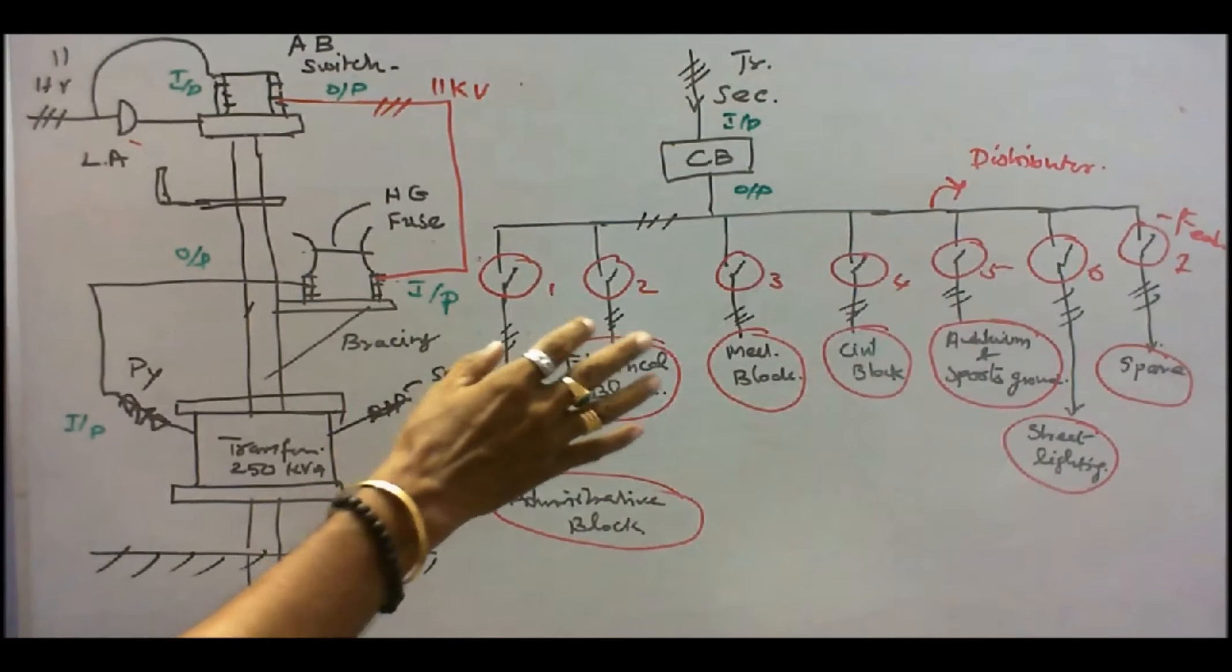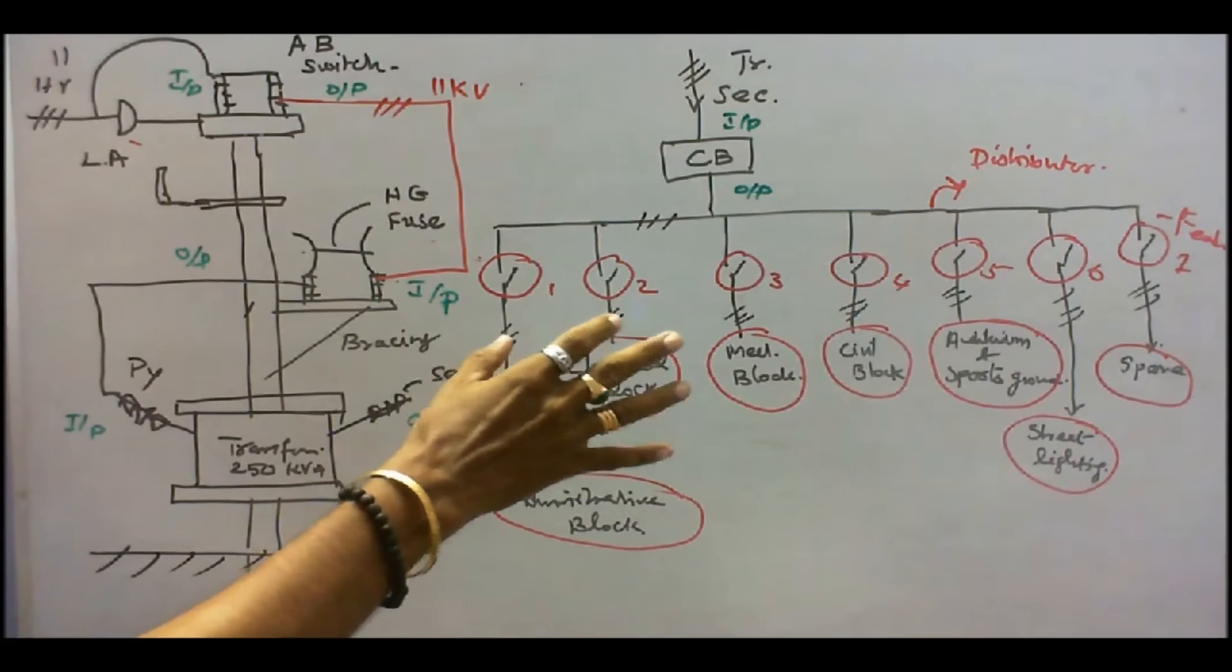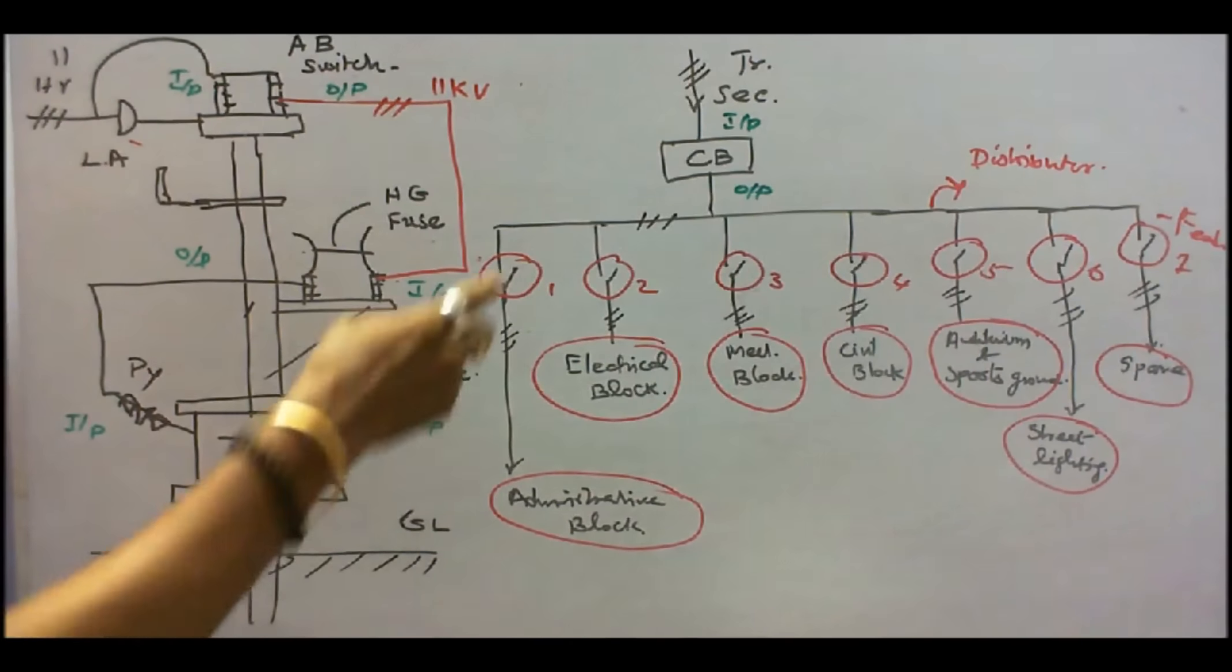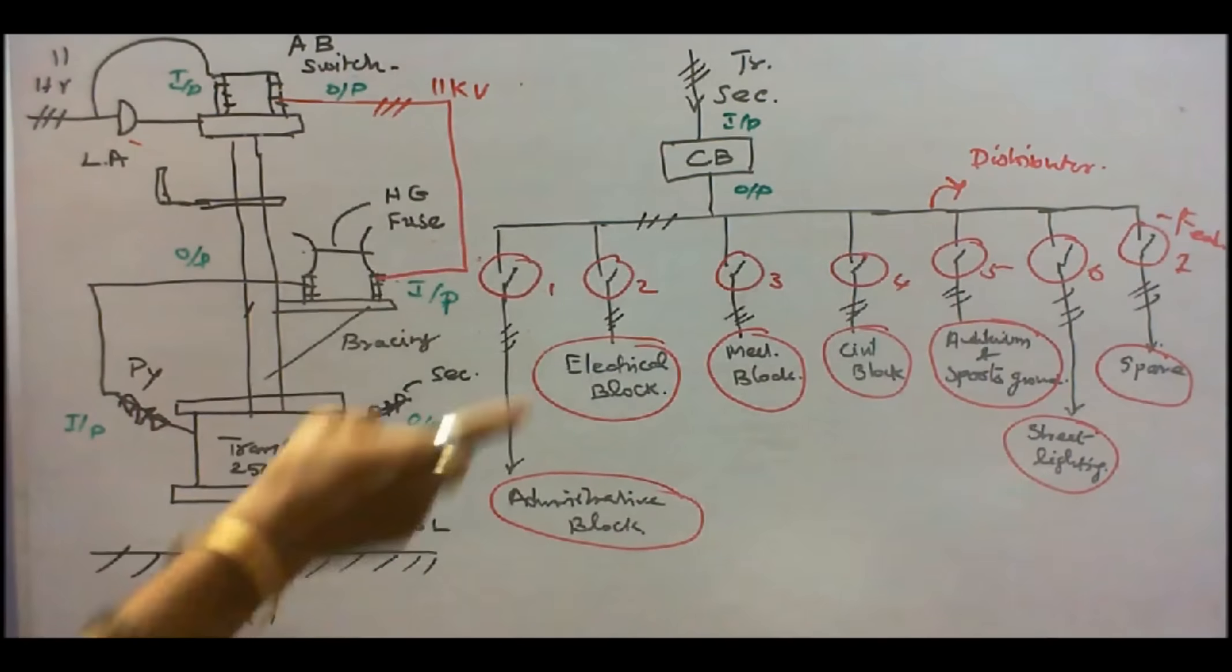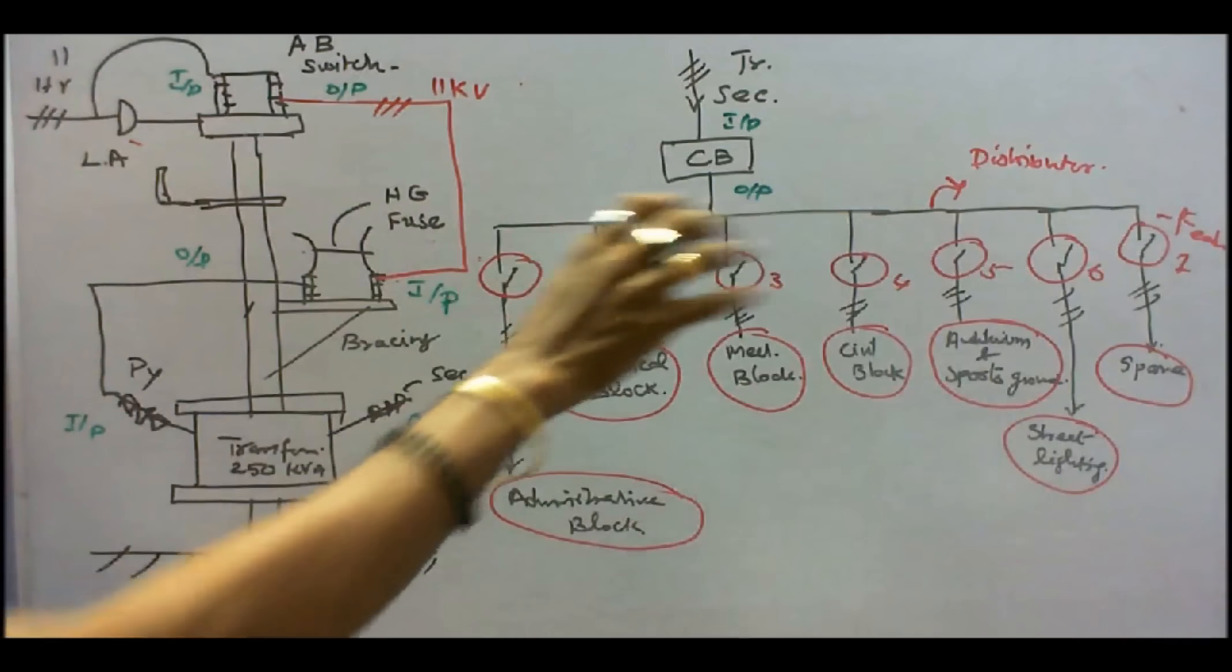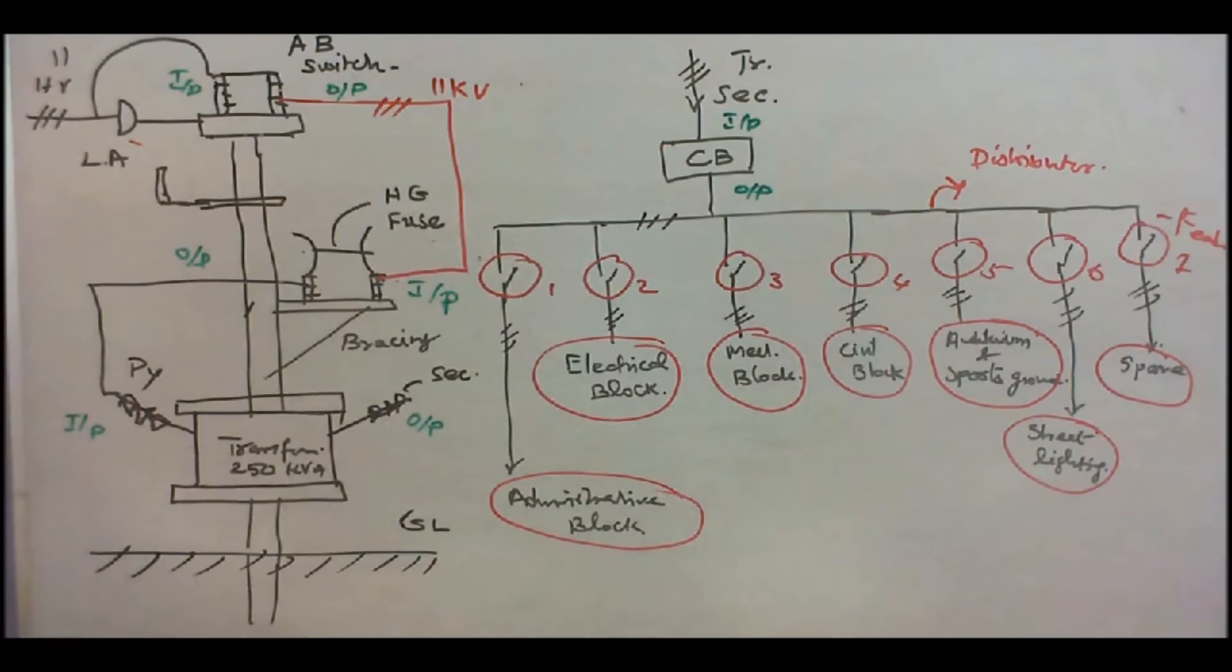This is a single line diagram of an electrical network of an engineering college. The output of the transformer secondary goes to the input of the circuit breaker. The output of the circuit breaker is connected to the distributor or bus bars, from where you can tap the power. Here, there are seven feeders.